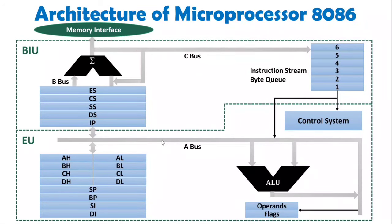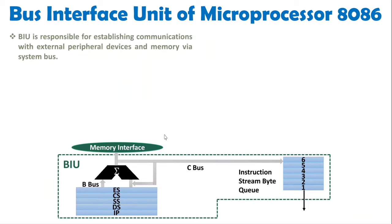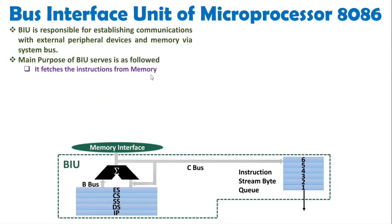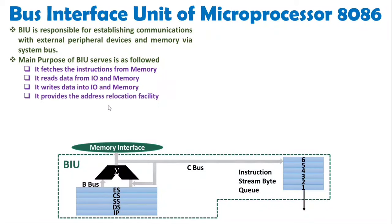The Bus Interface Unit is responsible for establishing communication with external peripheral devices and memory. Microprocessor 8086 communicates with I/O and memory through the BIU. The major purposes of the BIU are: to fetch instructions from memory, to read data from I/O and memory, to write data into I/O and memory, and to provide address reallocation through memory segmentation using segment registers.